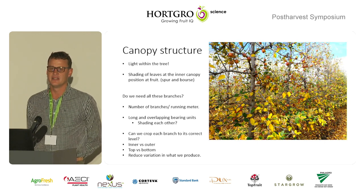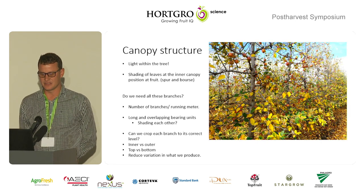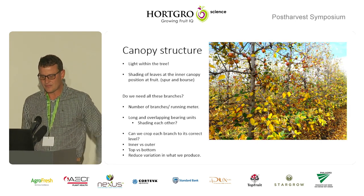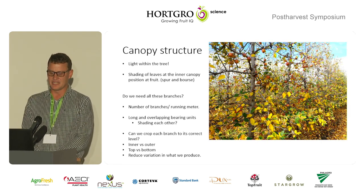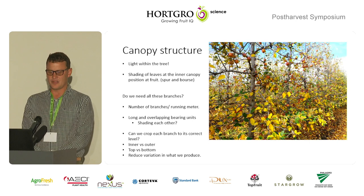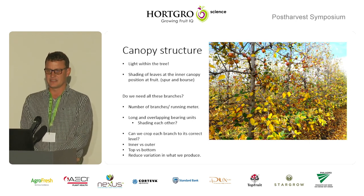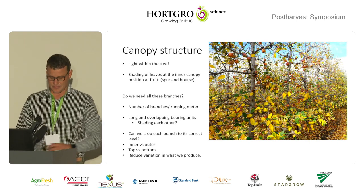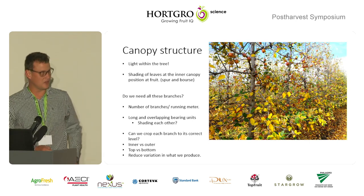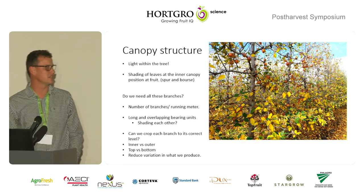The question comes back to: do we really need all these branches? If we look critically at the number of branches per running meter of the tree and the long and overlapping bearing units, do we really need all of this to produce good quality fruit? If we want to produce quality fruit with optimum maturity and less variability, we need to be able to look at inner and outer canopy, and the top and bottom of the tree, to say that we actually produce the same quality of fruit at all those different positions.